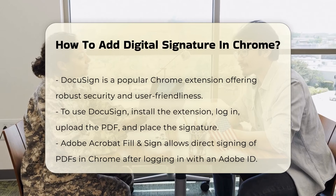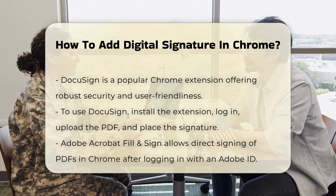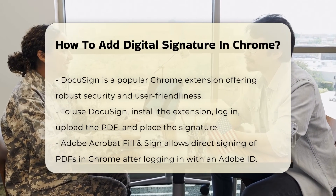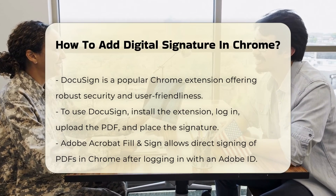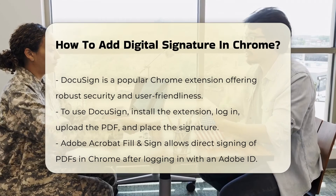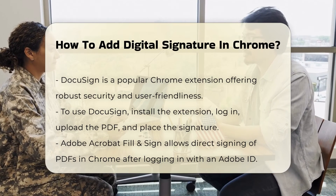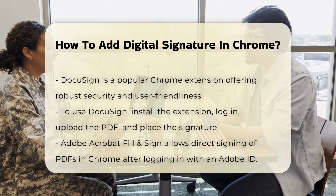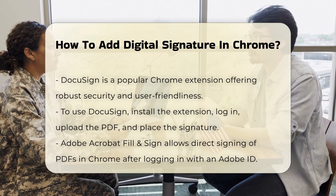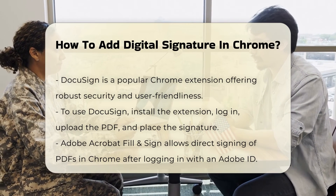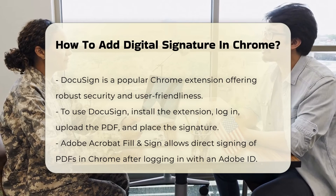Adobe Acrobat Fill & Sign is another tool that allows you to sign PDFs directly in Chrome. Install the Adobe Acrobat extension, log in with your Adobe ID, open the PDF, select Fill & Sign, add your signature, and save the edited PDF to your device or cloud storage.